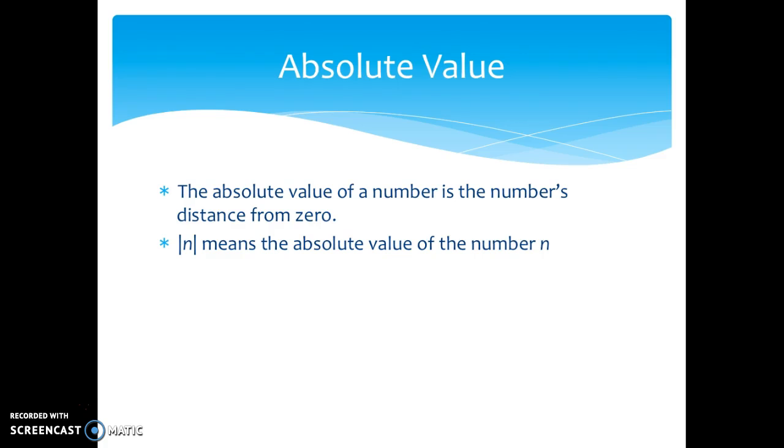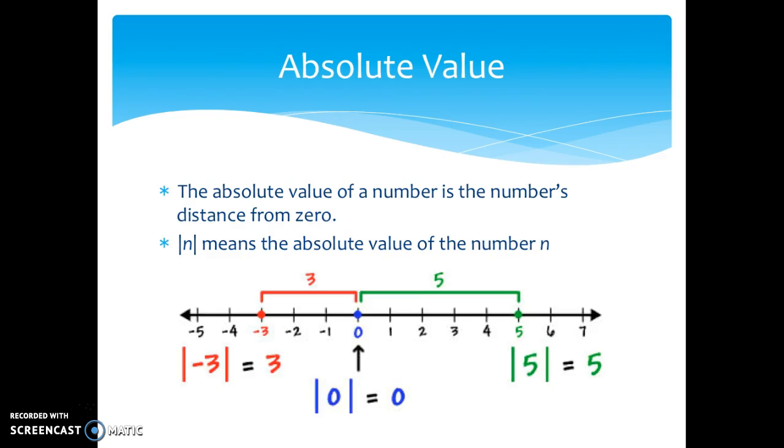Usually we have a number in there. You can't have a variable like I did for the example. So we'll look at a couple examples on a number line. The first one, if you look at the red, we're looking at the number negative 3, and negative 3, if you count it from zero, it's three spaces away from zero. So the absolute value of negative 3 is 3.